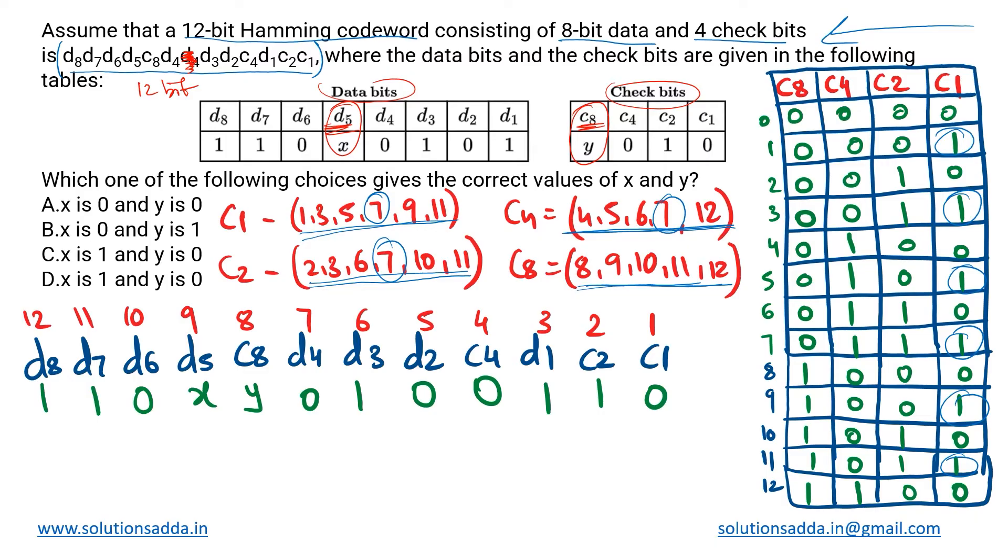Now how we'll be proceeding is: we have been given this particular sequence over here and its corresponding bits can be found from this table. We will create this particular representation in which we have first the given sequence, and in the next line in green we have their corresponding bits. For data bits we will use this first table and for check bits we'll be using this second table.